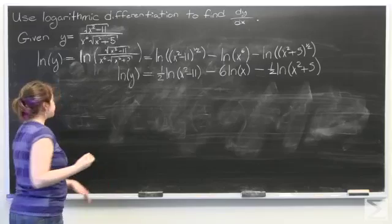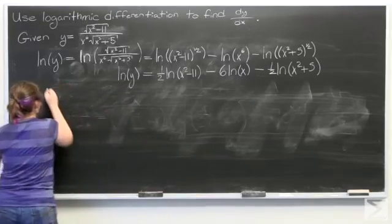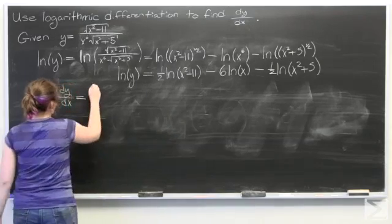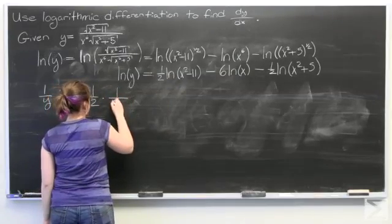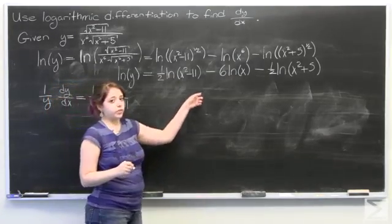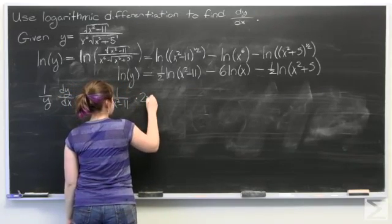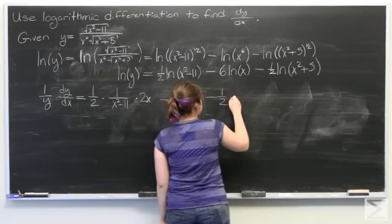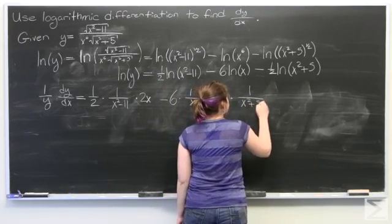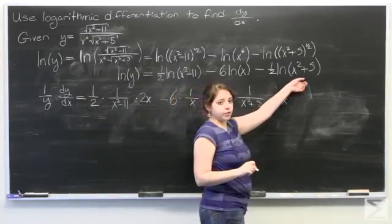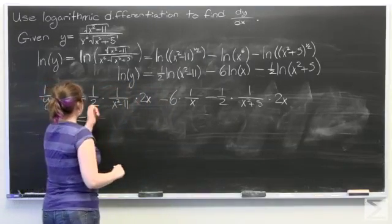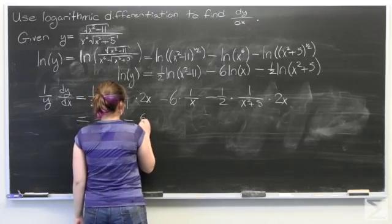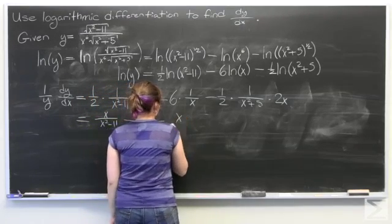Now we're ready to take the derivative. The derivative of the natural log of y is one over y times dy/dx. Then one-half times the derivative of the natural log of x squared minus eleven is one over x squared minus eleven times two x. Minus six times one over x. Minus one-half times one over x squared plus five times two x, because two x is the derivative of x squared plus five. We can simplify: one-half times two x is just x. So we have x over x squared minus eleven, minus six over x, minus x over x squared plus five.